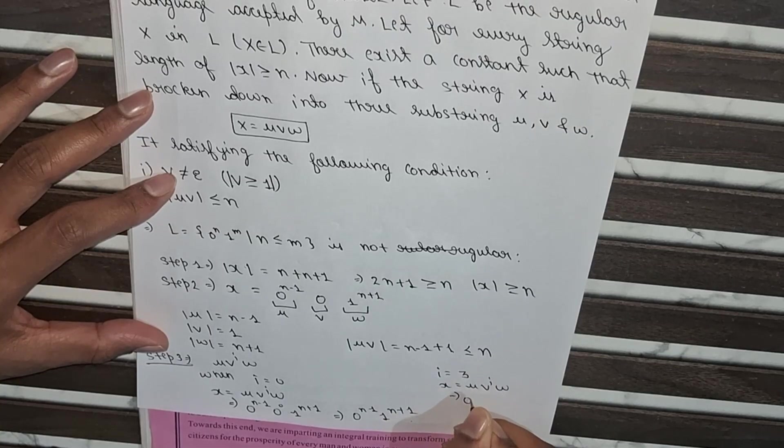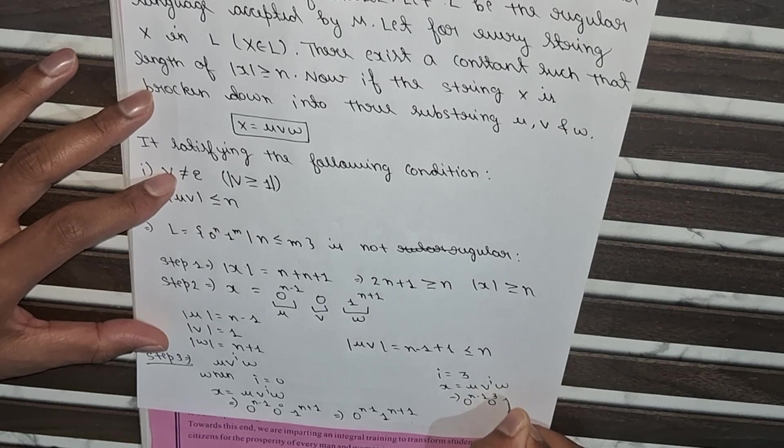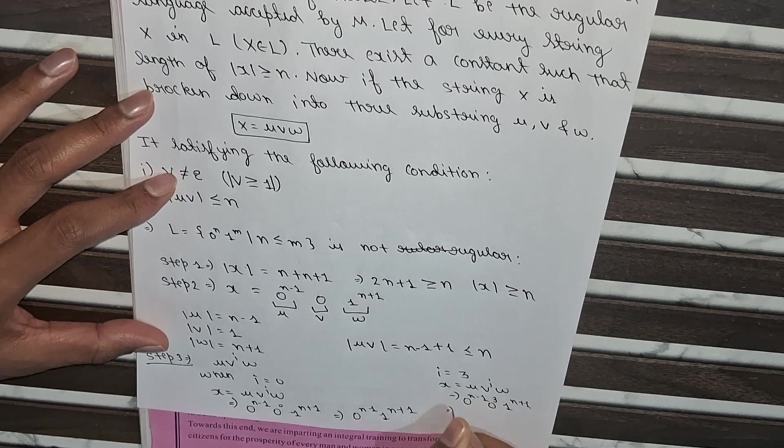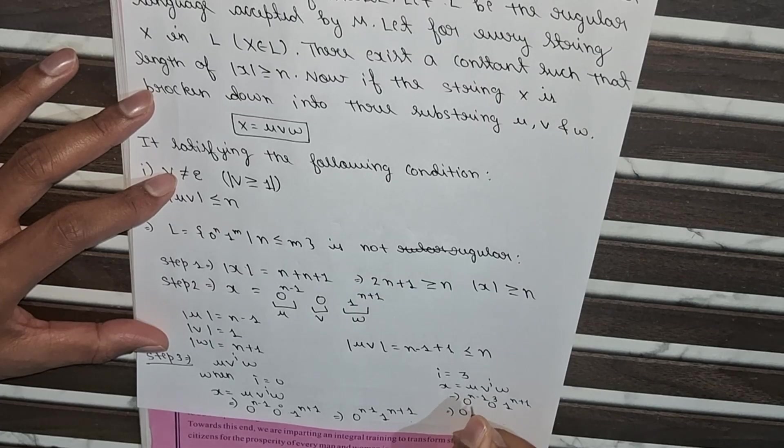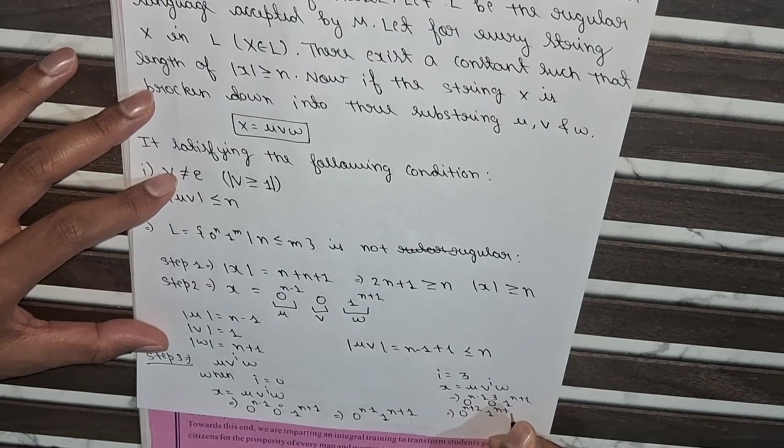So here it will be 0 to the power n minus 1 and 0 to the power 3 and 1 to the power n plus 1. So here base is the same, so power gets added. So 0 to the power, it will become n plus 2, and here 1 to the power n plus 1.